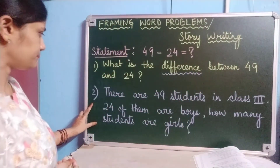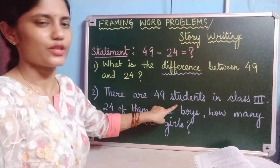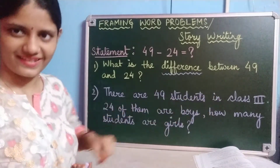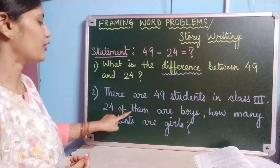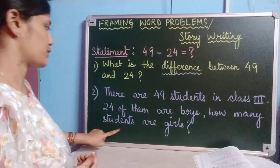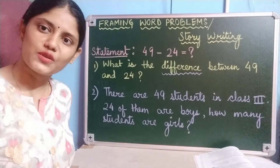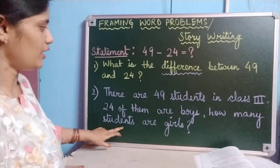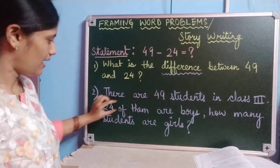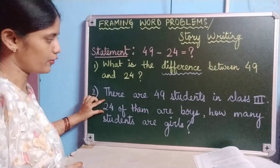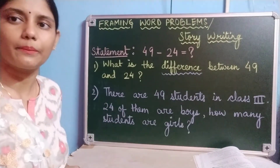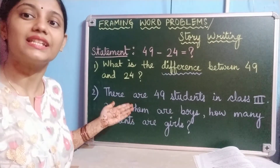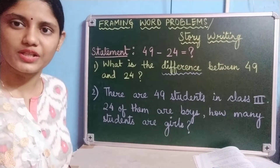Now the second word problem: there are 49 students in total in class 3. 24 of them are boys. How many students are girls? Here also, the total is given and out of them 24 are boys, so we need to find out the number of girls. This question is also asking about the difference between 49 and 24.